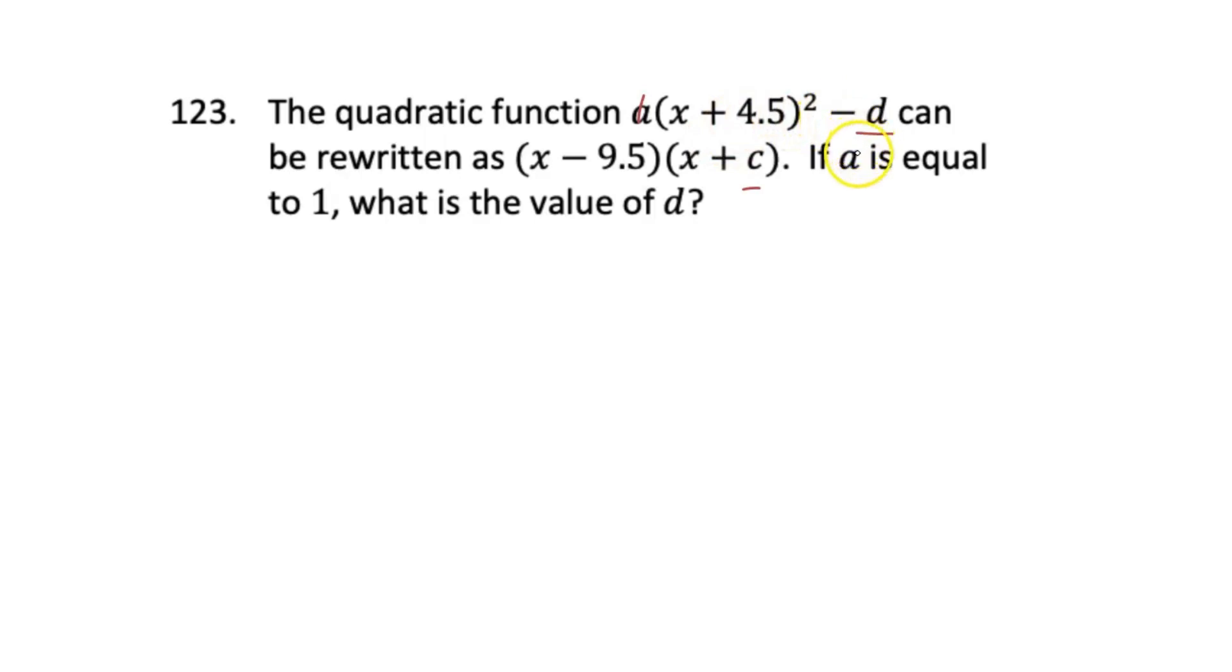So now we're left with (x + 4.5)² - d, and then this factored out expression of (x - 9.5)(x + c). So in order to solve this problem, what we need to do is first get them in the same form. Because we know these are both quadratic functions. If we get them in the same form, we can make that accurate one-to-one comparison.